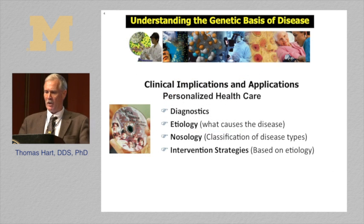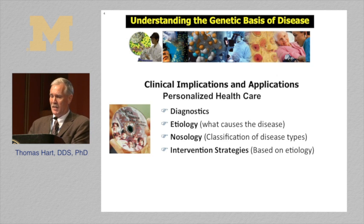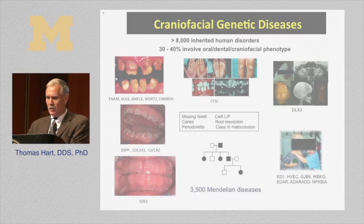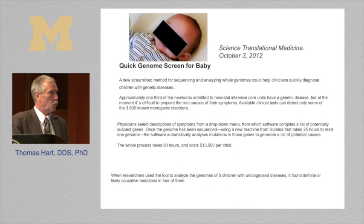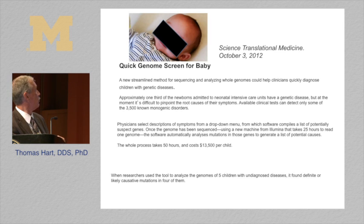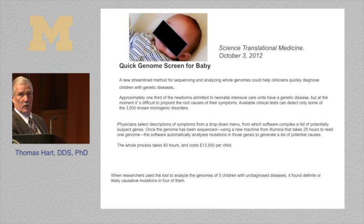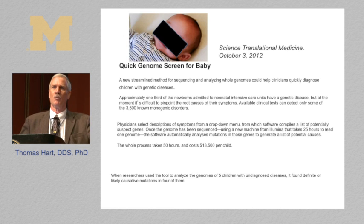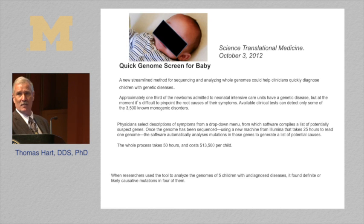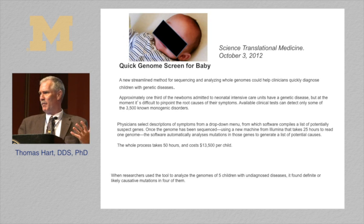In terms of intervention strategies — how are we going to use this genetic information? This was published last week in Science Translational Medicine: in a neonatal intensive care unit where a significant number of admissions are due to genetic diseases of unknown cause, five babies' genomes were sequenced in 25 hours, read in another 25 hours — 50 hours total from DNA to analysis — at a cost of about $13,500 per child. They were able to identify the genetic basis of four of the five conditions. This is really coming. The pressures are here, and this is going to start to pervade health care and dentistry.